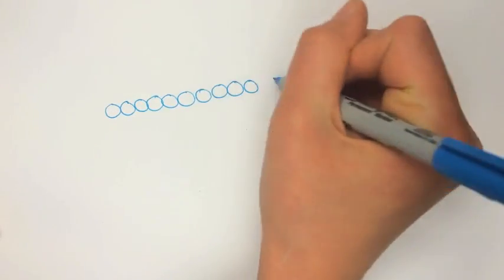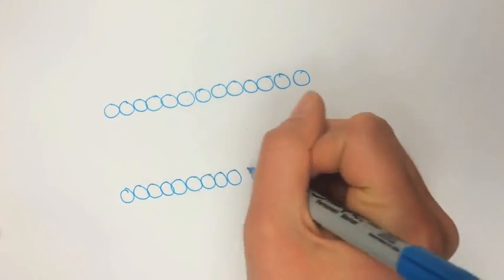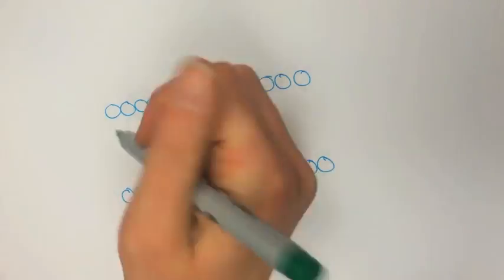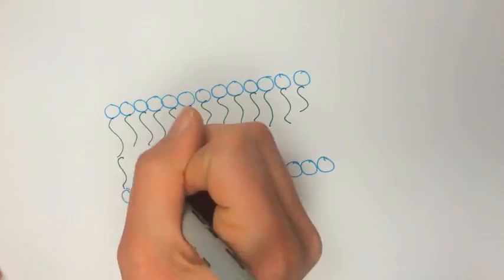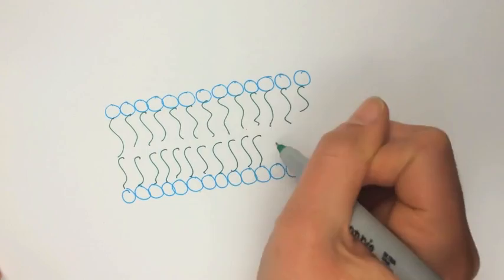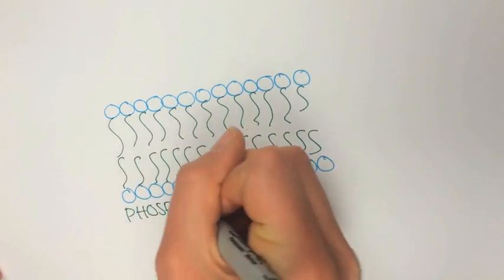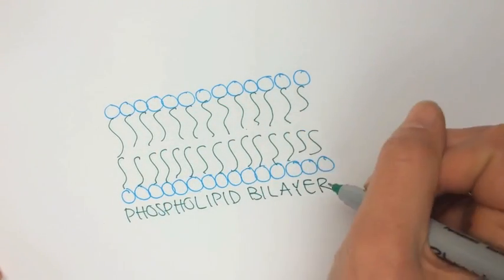When I initially heard that water comprises approximately 60% of human body mass and is essential to normal physiological functioning, I immediately thought, wait, water is polar, but the cell membrane is not polar. Can water freely diffuse across?